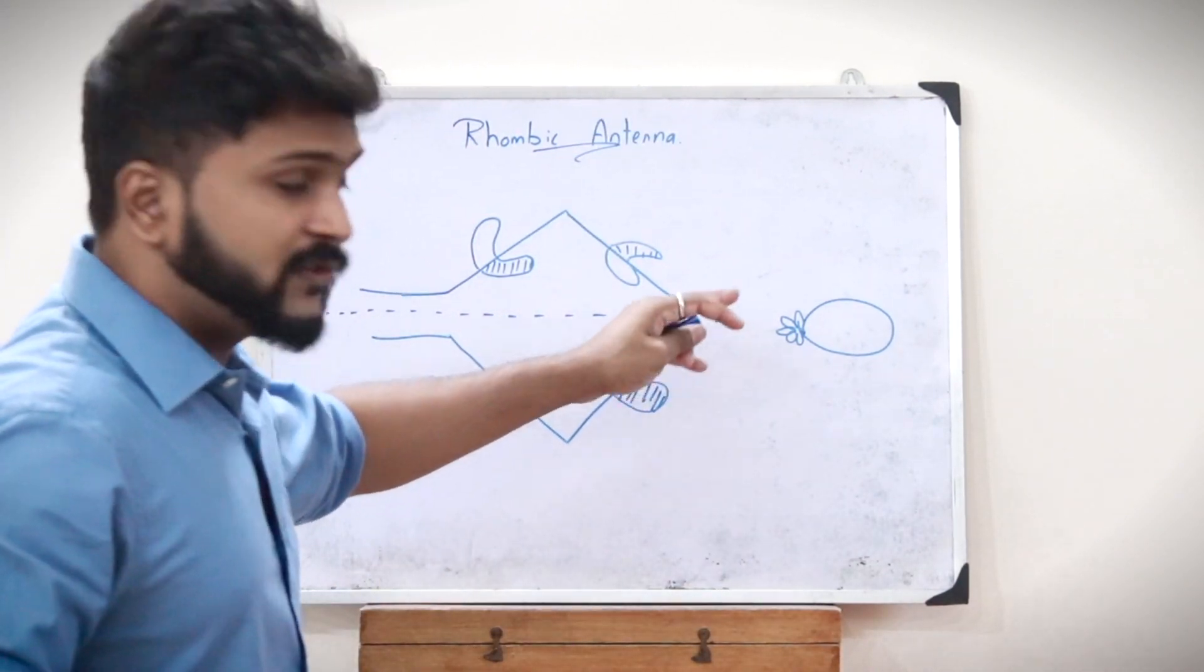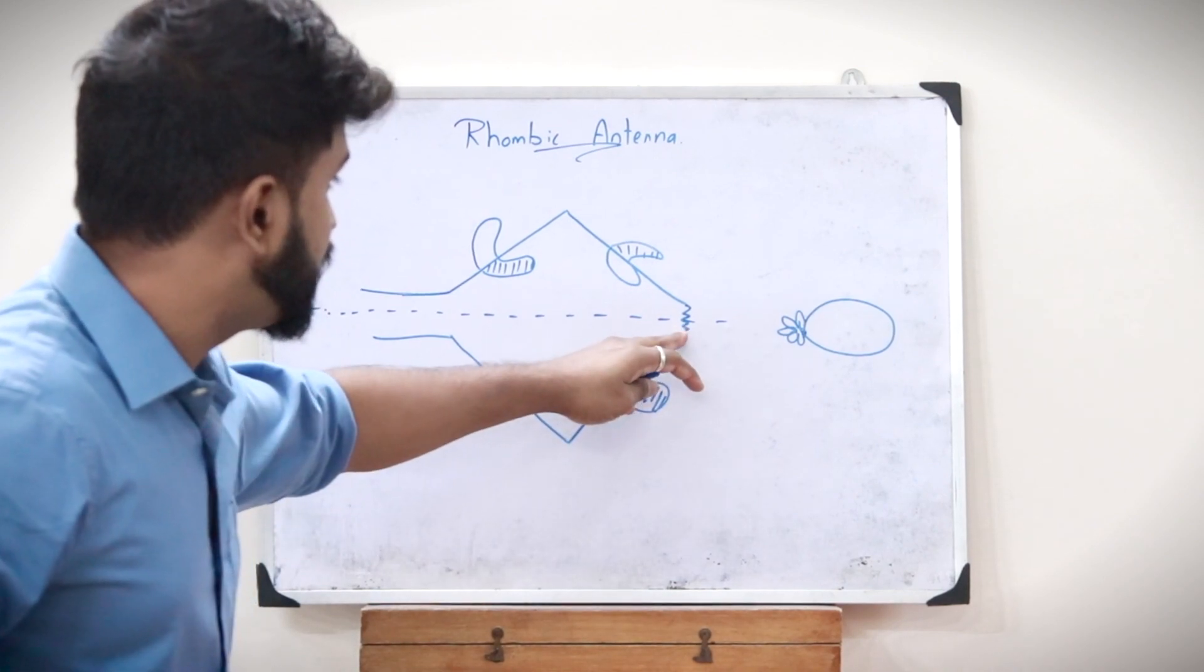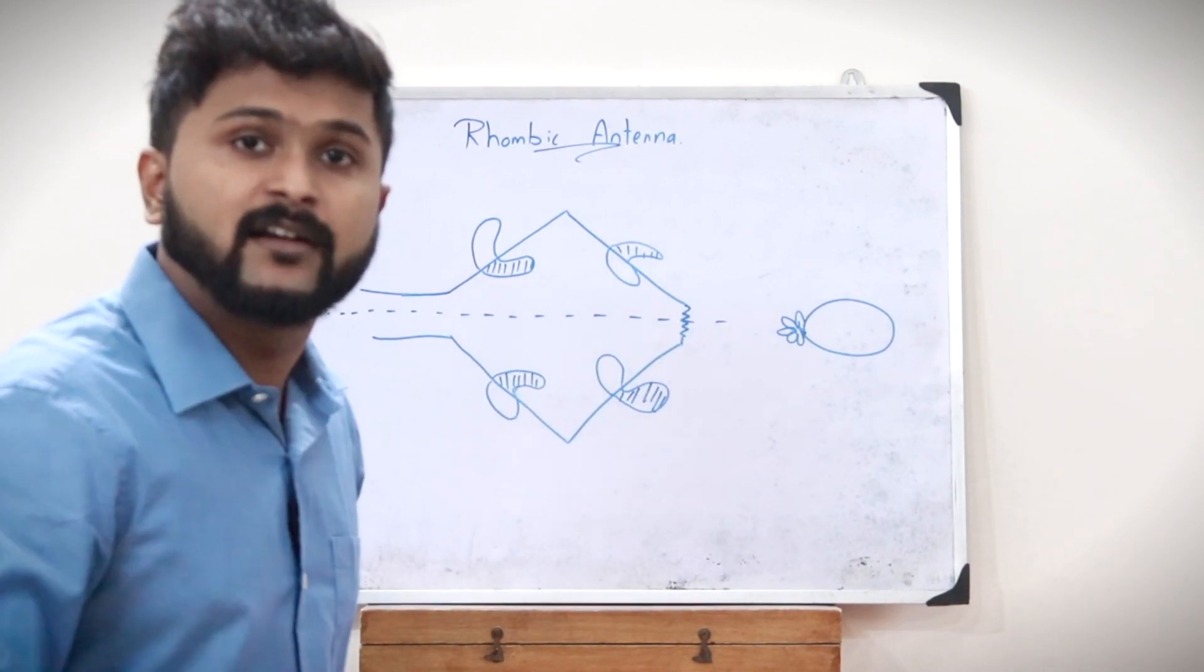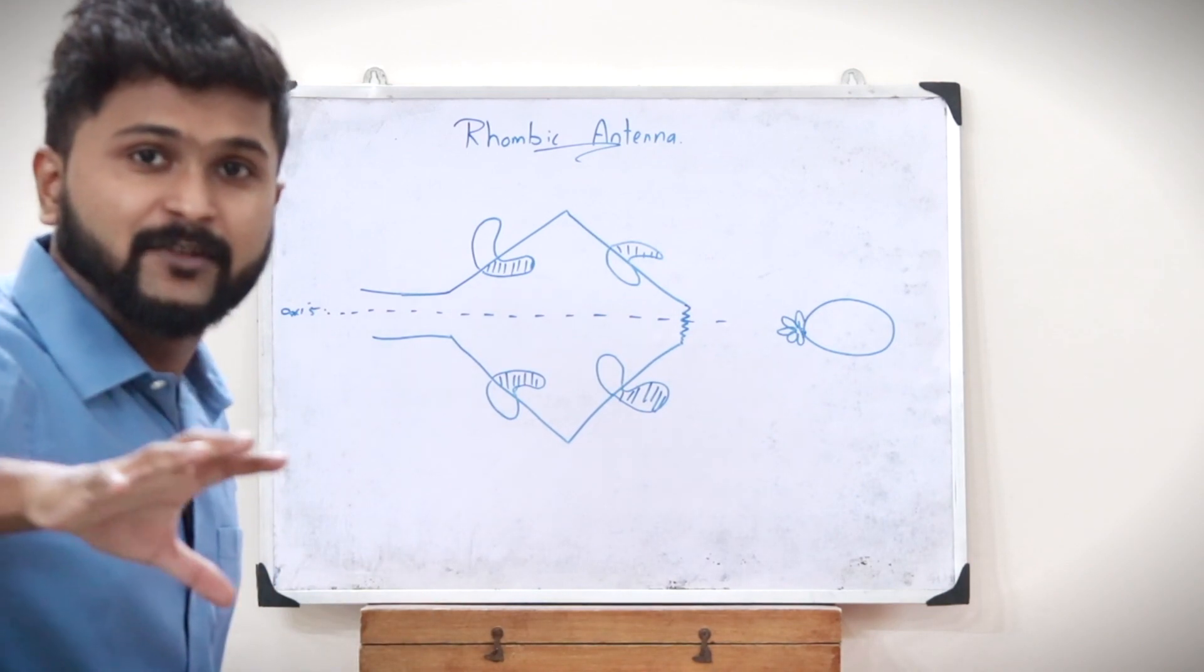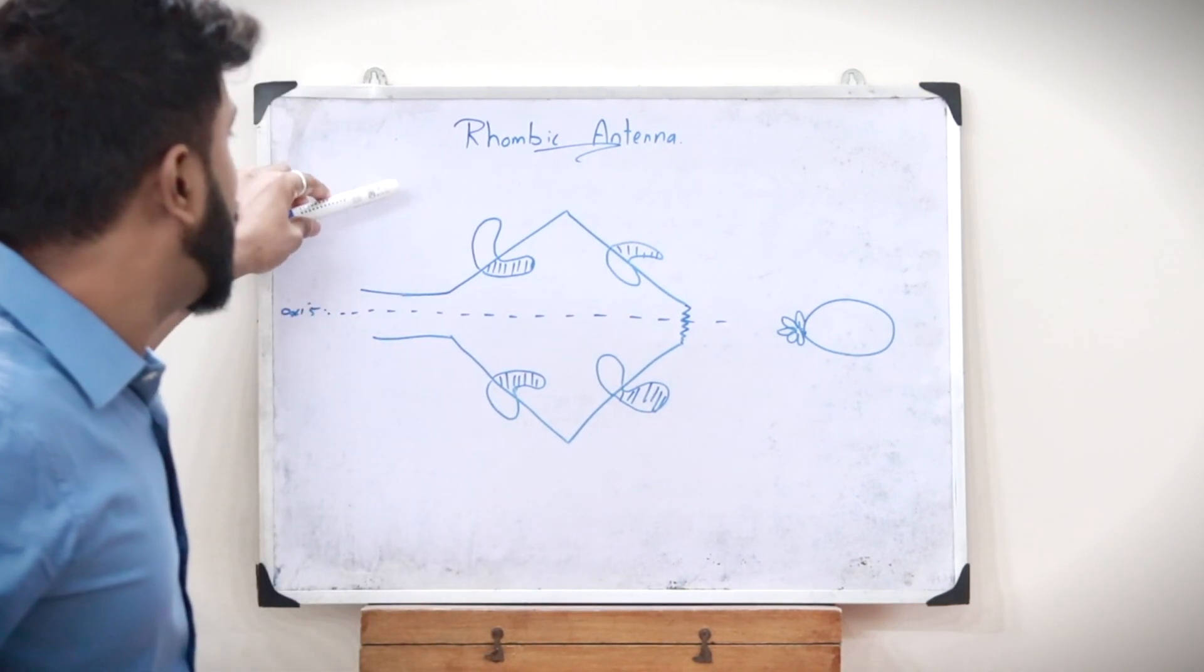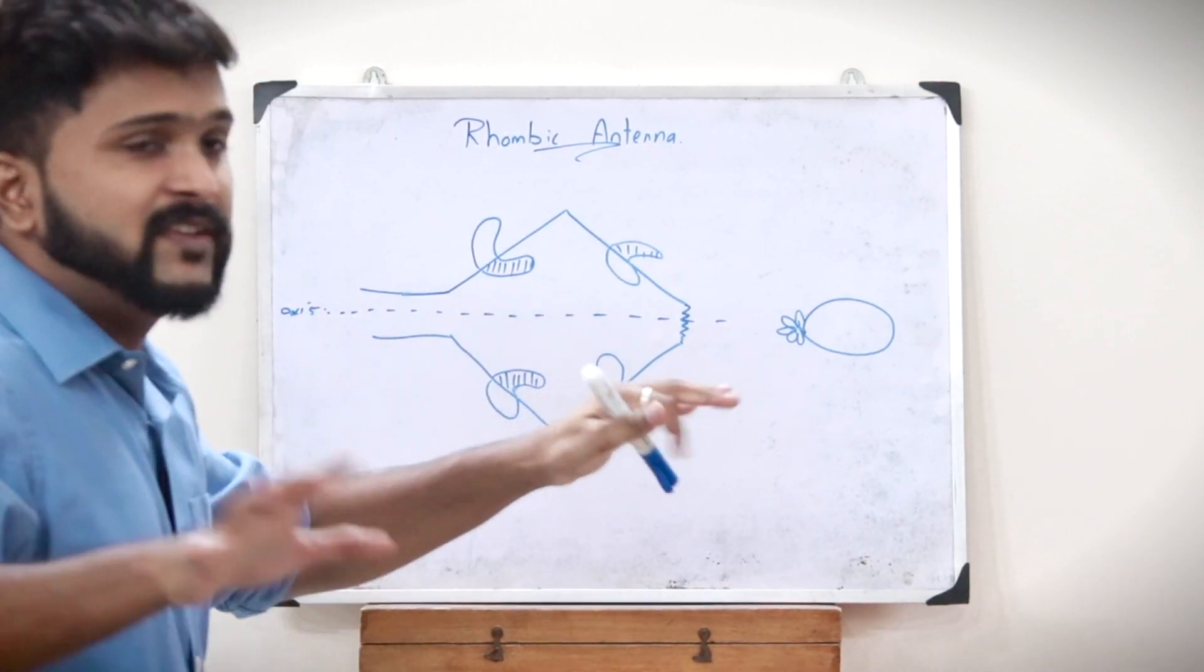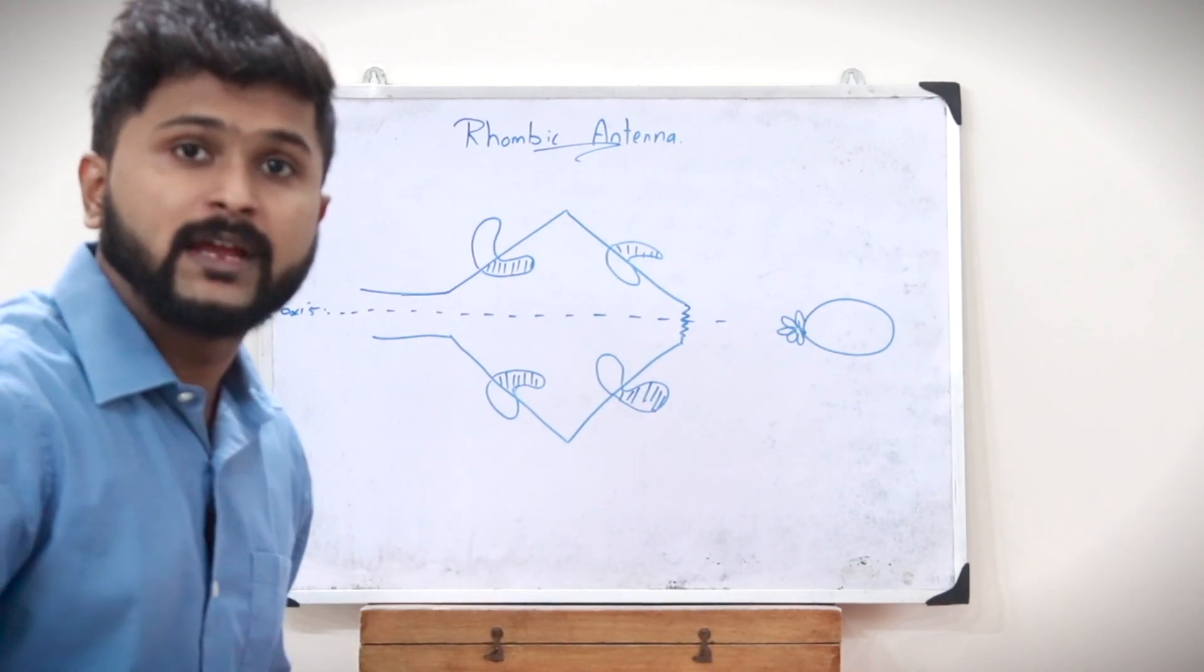The terminating resistance value can vary from around 600 ohms to around 800 ohms. So this gives you a brief introduction as to how a rhombic antenna looks like and the basic concepts behind a rhombic antenna.